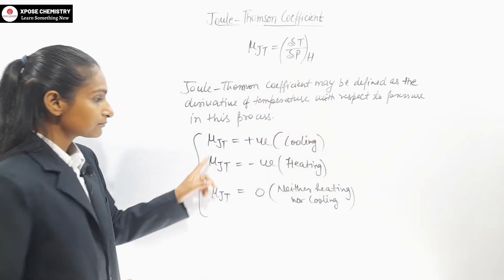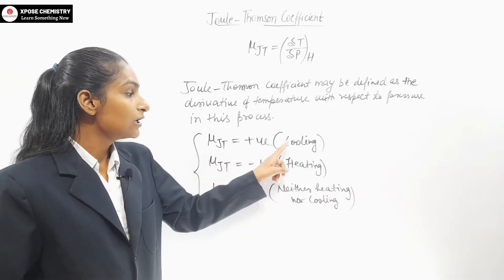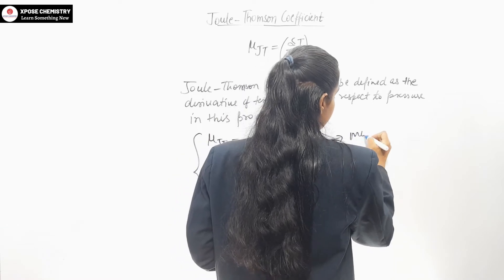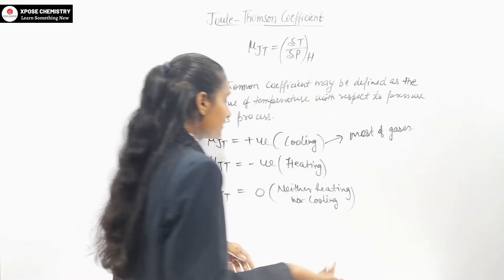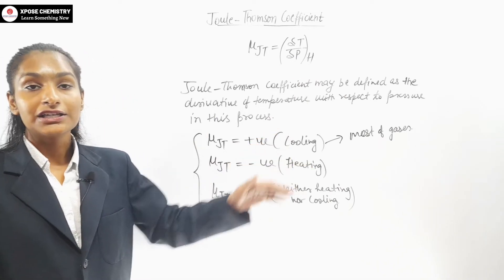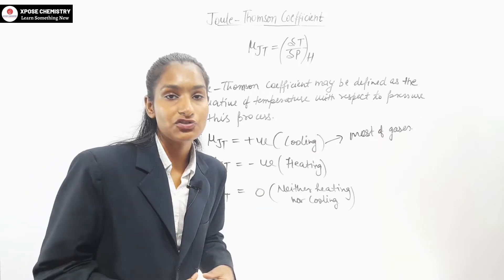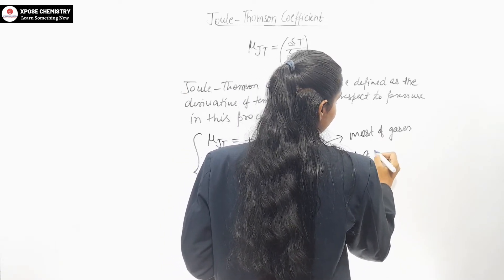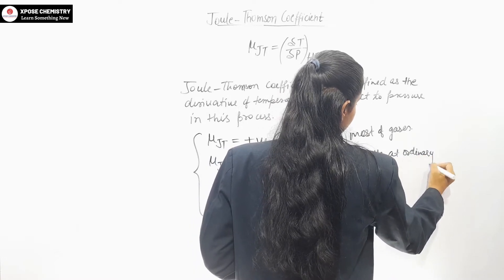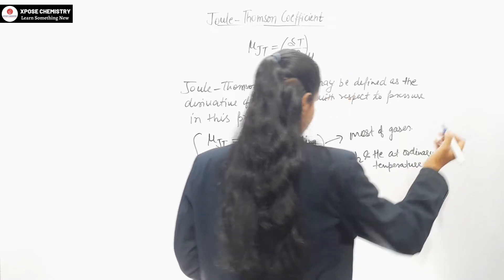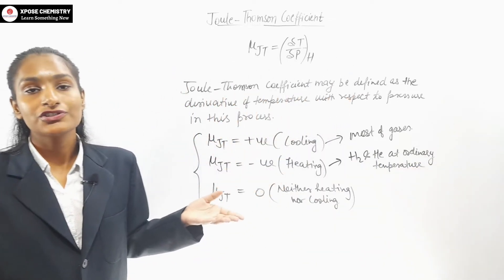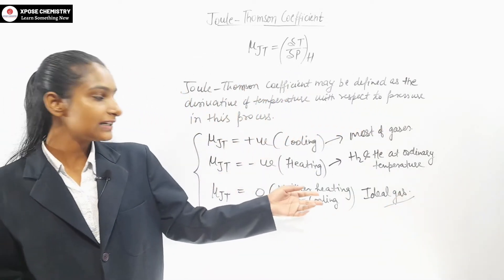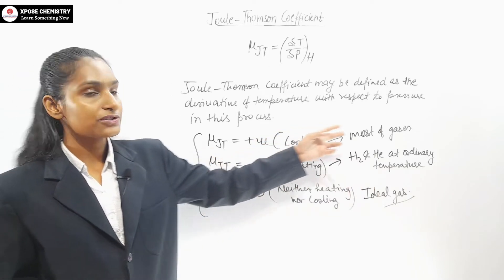So the three cases are important: μJT positive means cooling, μJT negative means heating, and μJT zero means neither heating nor cooling. For most gases, μJT is positive — cooling occurs. However, hydrogen and helium at ordinary room temperature show negative μJT — meaning they show a heating effect. For an ideal gas, μJT is zero.